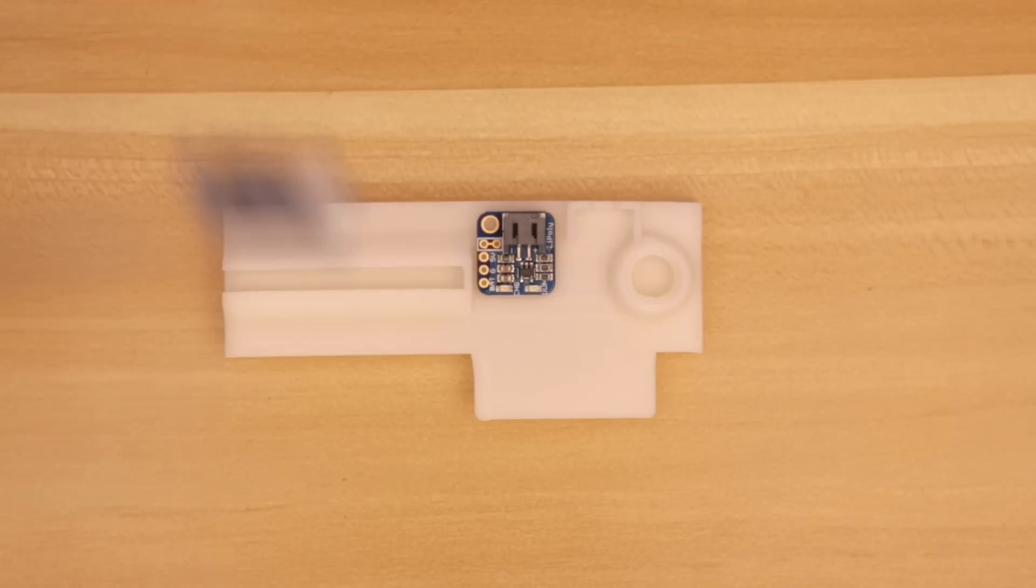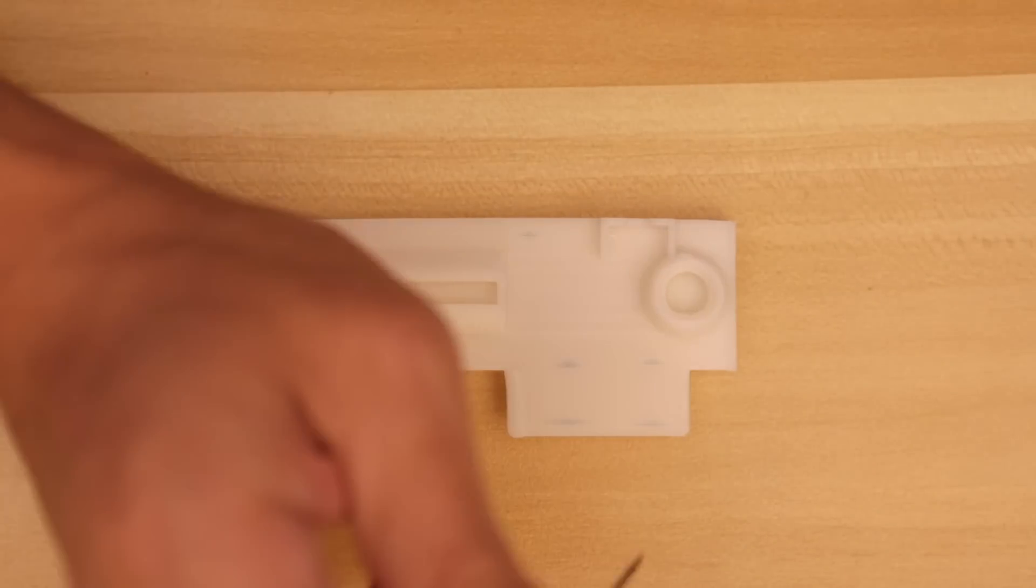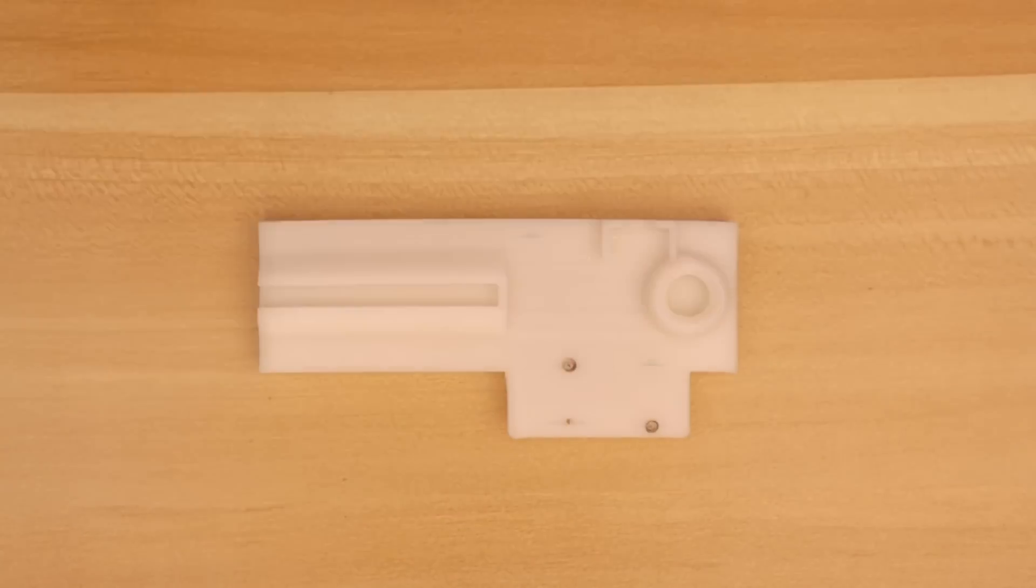We did the same process for the LiPo backpack and the Adafruit trinket. We laid it out like this, marked the mounting holes, used a needle to create the holes, and made threads with the machine screws.